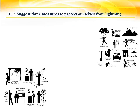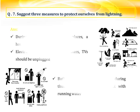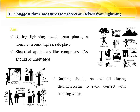Question number seven: suggest three measures to protect ourselves from lightning. First, during lightning, avoid open spaces — a house or a building is a safe place. Second, electrical appliances like computers and TVs should be unplugged. Third, bathing should be avoided during thunderstorms to avoid contact with running water, as water is a good conductor of electricity.